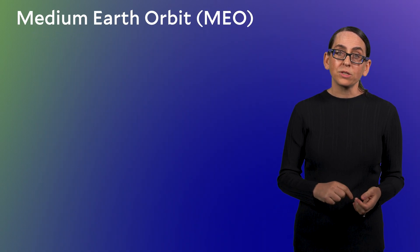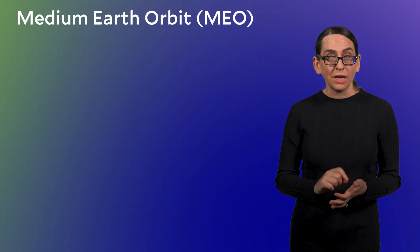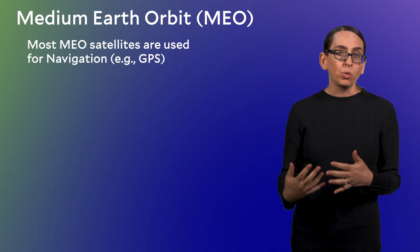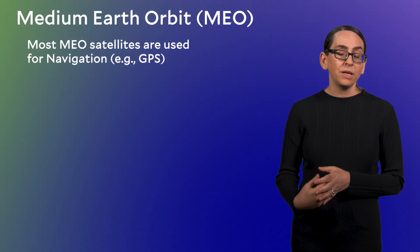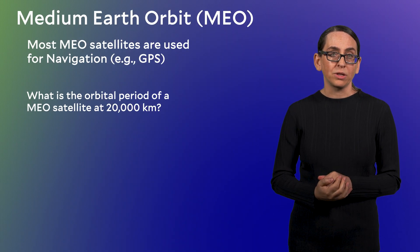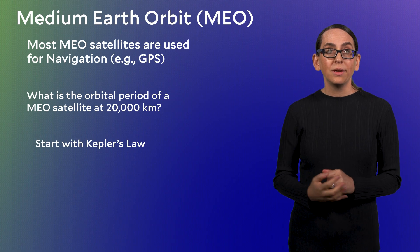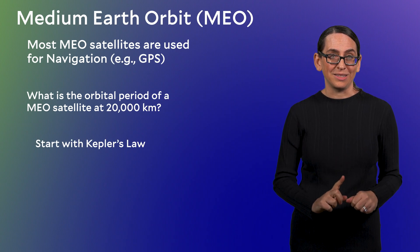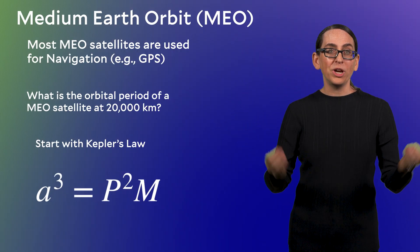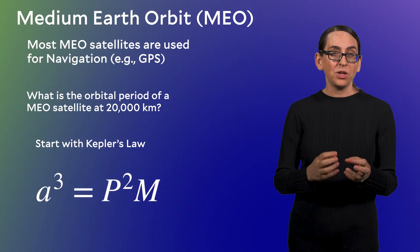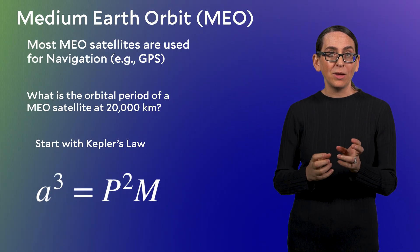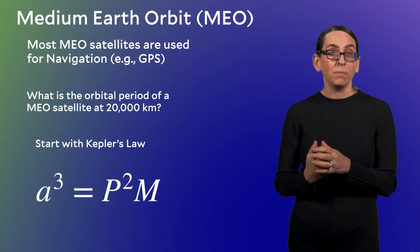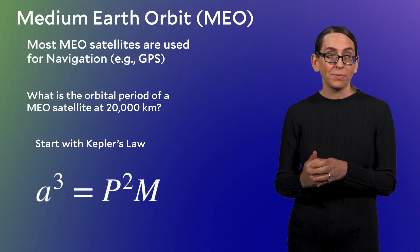Let's next focus on why most satellites in this region are navigation satellites. In order to avoid the worst of the Van Allen belts, satellites in medium Earth orbit tend to hang out at about 20,000 kilometers from the Earth's surface. Let's use Kepler's third law to determine the orbital period at this distance. Calling up the equation that we've used before, a^3 = P^2 M, we can compute the orbital period P given the distance of a medium Earth orbit satellite.